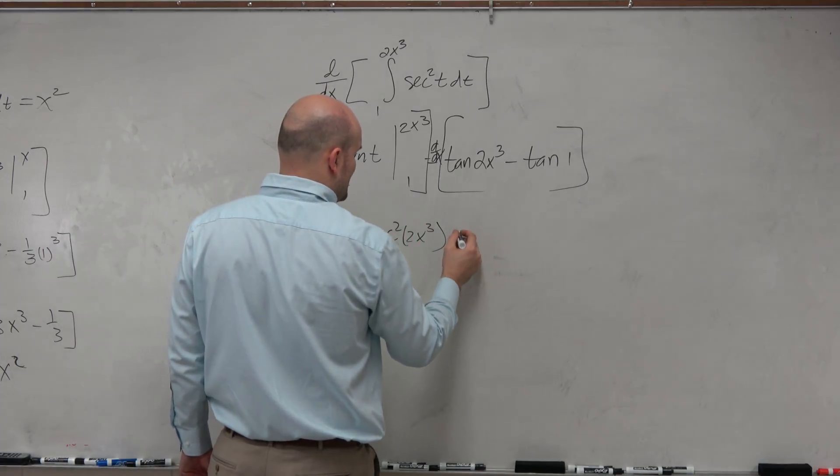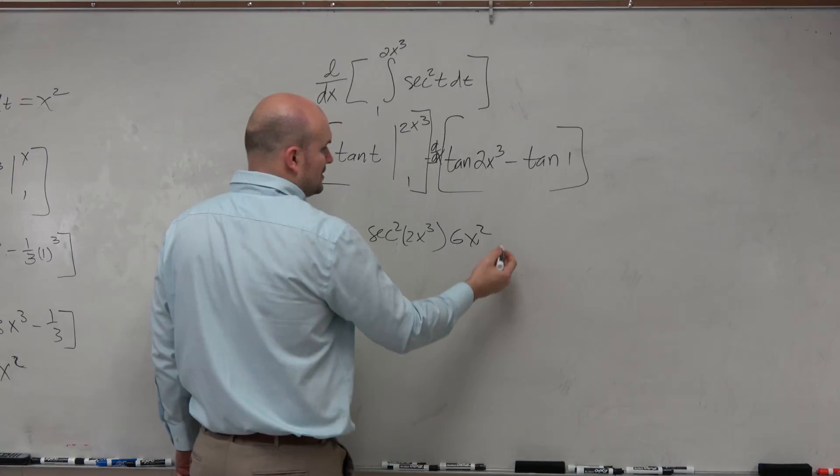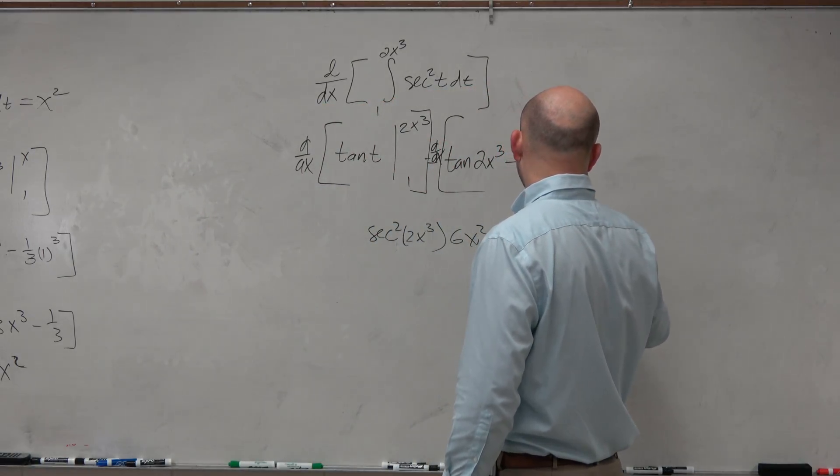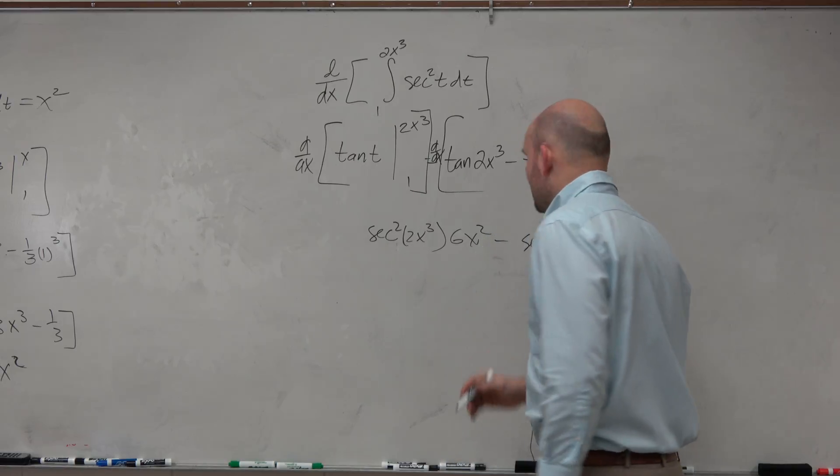which is going to be times 6x squared minus derivative of tangent is going to be secant squared of 1 times the chain.